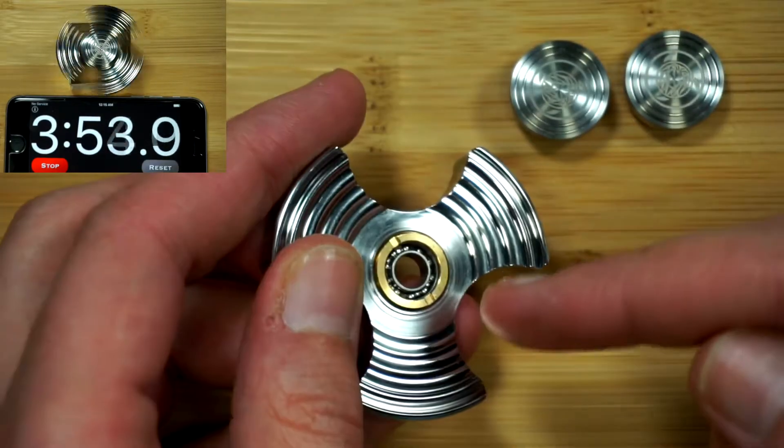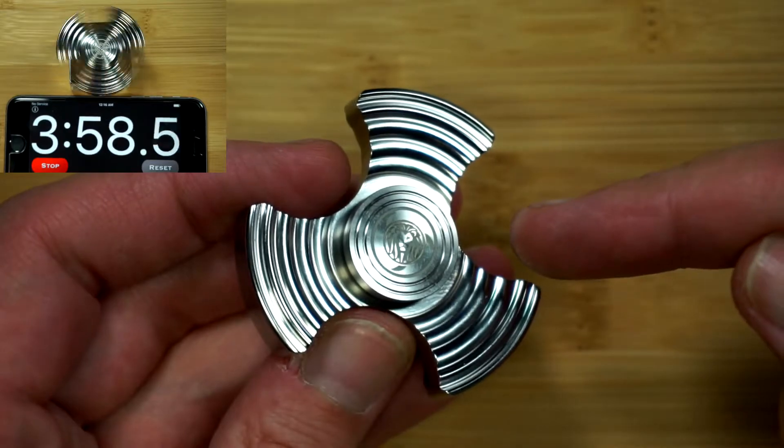Getting this back together. Bearing, retention ring, button one, button two. Spin.